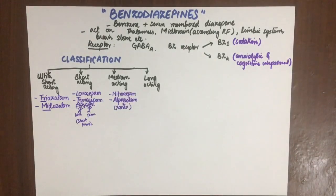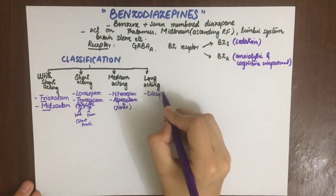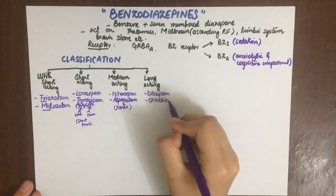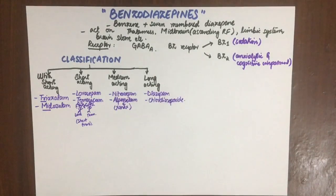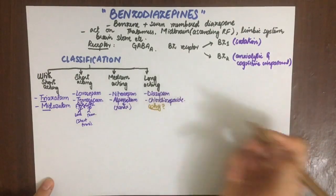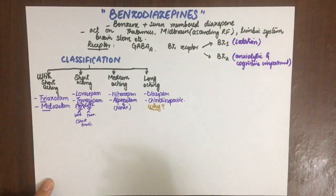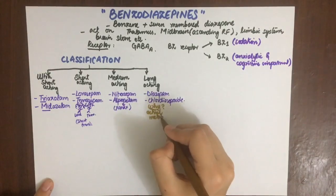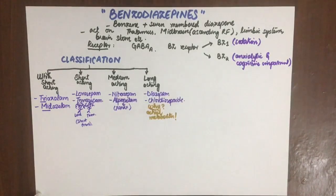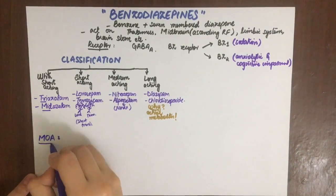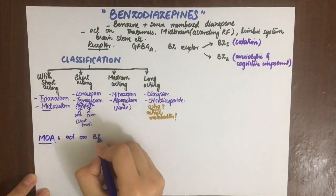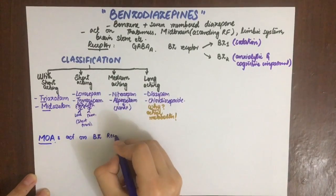Medium acting are nitrazepam and alprazolam. Alprazolam is the commonly used Xanax for sleep. Long acting include diazepam and chlordiazepoxide. They are long acting because they produce metabolites such as desmethyldiazepam or nordiazepam, which have a high half-life of about 40 hours. Their metabolites are long acting and pharmacologically active.